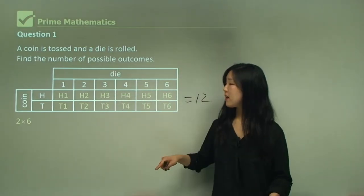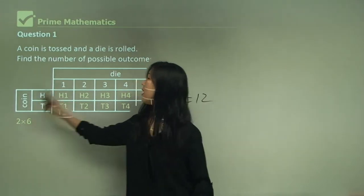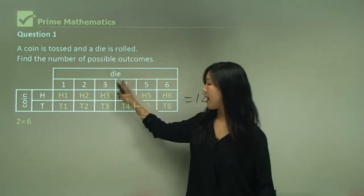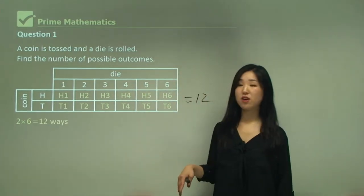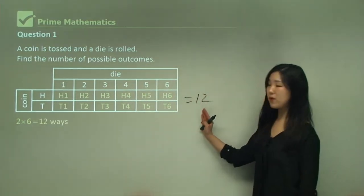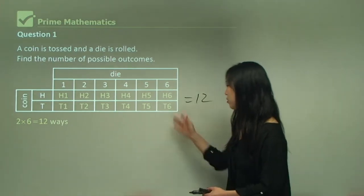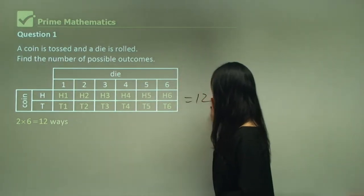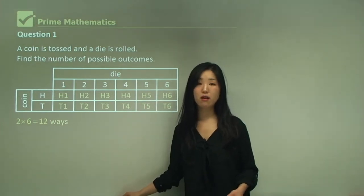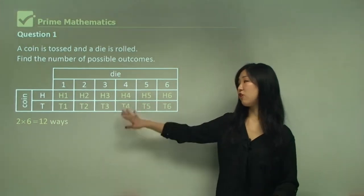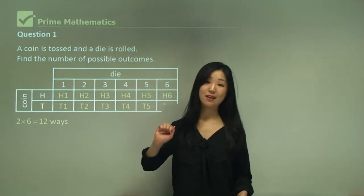The coin has two outcomes — head and tail — and the die has six. Just multiply them together and you get 12, which is exactly the same as what we counted up. It would be a good idea to draw up a table like this so you can see how many there are, but in the question you don't necessarily have to — you can just use your basic counting technique.